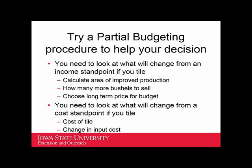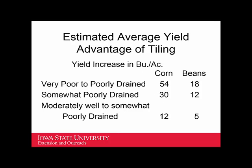On the cost side, there's the cost of the tile and what other costs change because you tile the field. Looking at projected yield increases from old research data: on really swampy ground, maybe we can get 50-plus more bushels of corn per acre and maybe 18 bushels more of beans. If the land is moderately well-drained but still needs help, maybe you're in that 12-bushel corn or 5-bushel bean range.